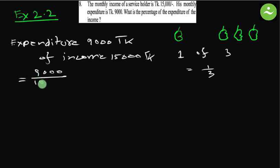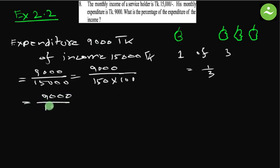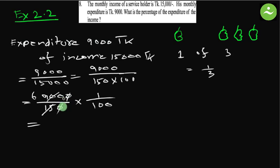So 9,000 by 15,000. They said what is the percentage — we have to express this fraction as percentage. So 9,000 multiplied by 100, separate 1 by 100. Equals to 9,000 by 150 multiplied by 1 by 100. Simplify — zeros gone, divide both by 15, it will be 6. So 60 multiplied by 1 by 100 means percent. So 60%. That is the answer.